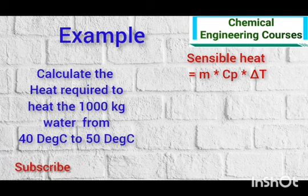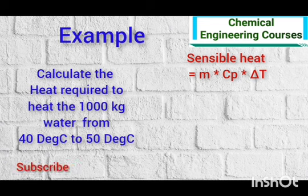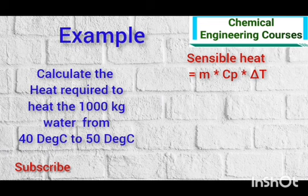the specific heat of water which is 1 kilocalorie per kg per degree Celsius, and delta T is 50 minus 40 which is 10 degree Celsius. So we simply put these values into the formula.